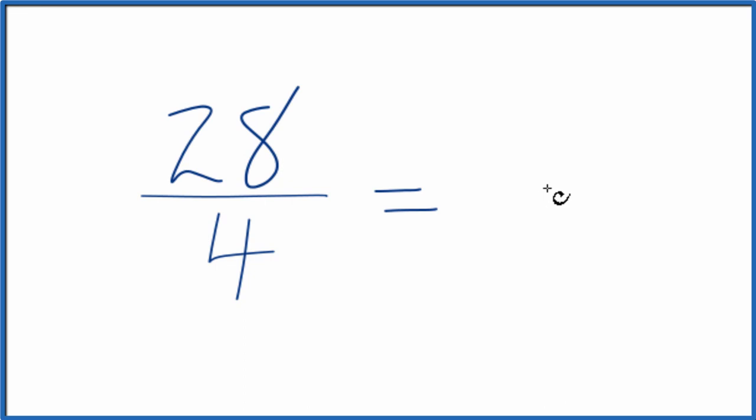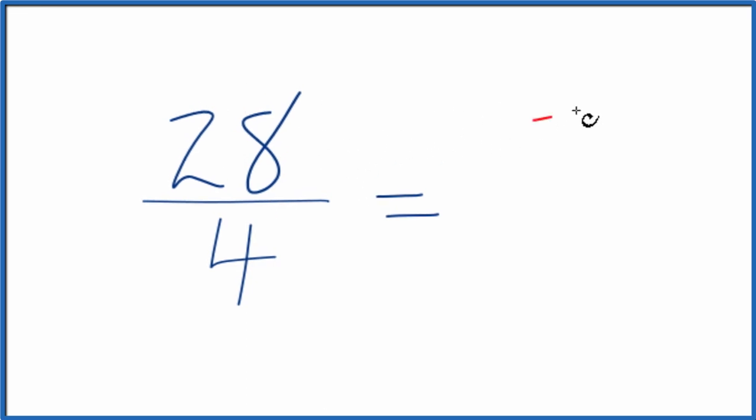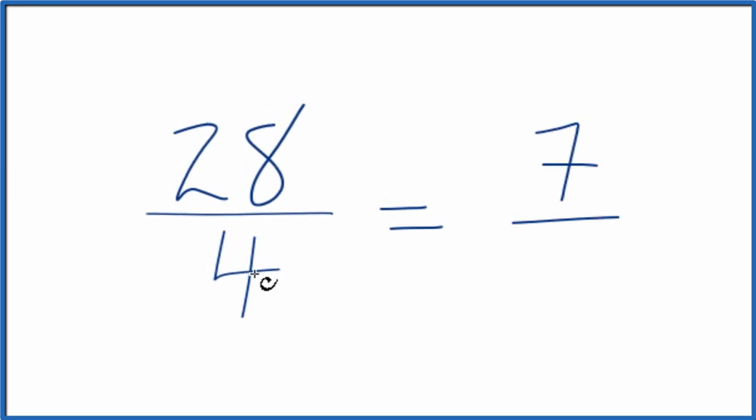So we're looking for a common factor, something that goes into both 28 and 4 evenly. I know that 4 will go into itself evenly, and 4 will go into 28 seven times. 28 divided by 4, that gives us 7, and then 4 divided by 4, that gives us 1.